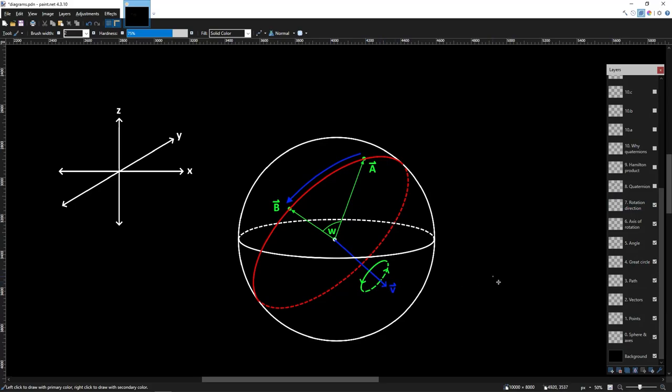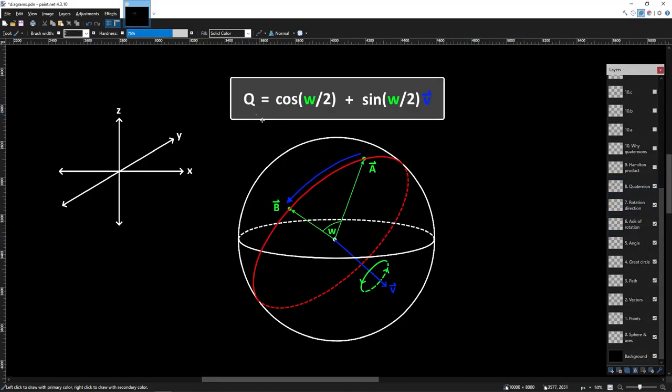Now how does this relate to quaternions? Well a quaternion is defined as a scalar plus a vector, and we can completely describe our rotation of A onto B using a scalar, W, and a vector, V. So let's construct a quaternion Q that uses these quantities. This is equal to the cosine of our angle W divided by 2, plus the sine of our angle W divided by 2, multiplied by our vector V. Where again, the vector V describes our axis of rotation.